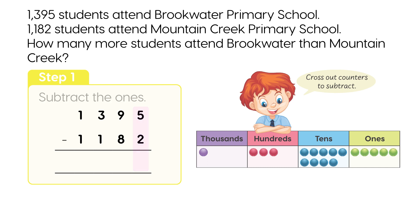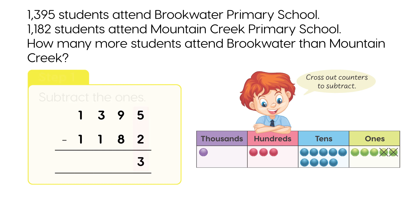Step 1: Subtract the 1's. 5 1's minus 2 1's is 3 1's. Step 2: Subtract the 10's. 9 10's minus 8 10's is 1 10.